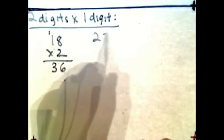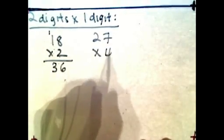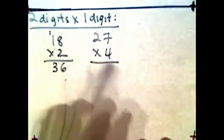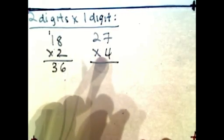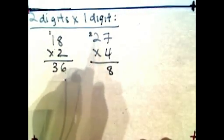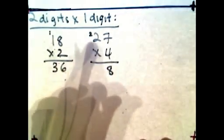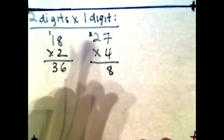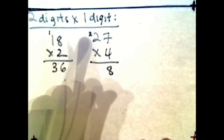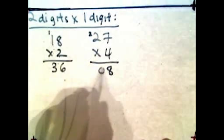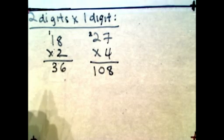Let's try another one. 27 times 4. 7 times 4 is 28. Carry the 2 in the 10th column. And 2 times 4 is 8 plus 2. Remember, it's plus 2. So 8 plus 2 is 10, giving us 108. See how easy that is?